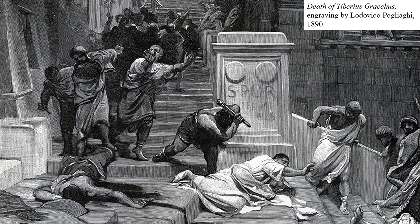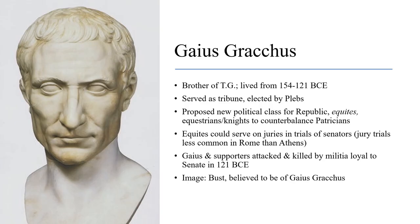Tiberius wanted to break up the large latifundia estates and return the land to poorer Romans so they could be more independent. We should also mention Gaius Gracchus, the brother of Tiberius, who lived from 154 to 121 BCE. He served as a tribune — one of the few Roman politicians that could actually be elected by plebeians, by everyday Roman citizens.